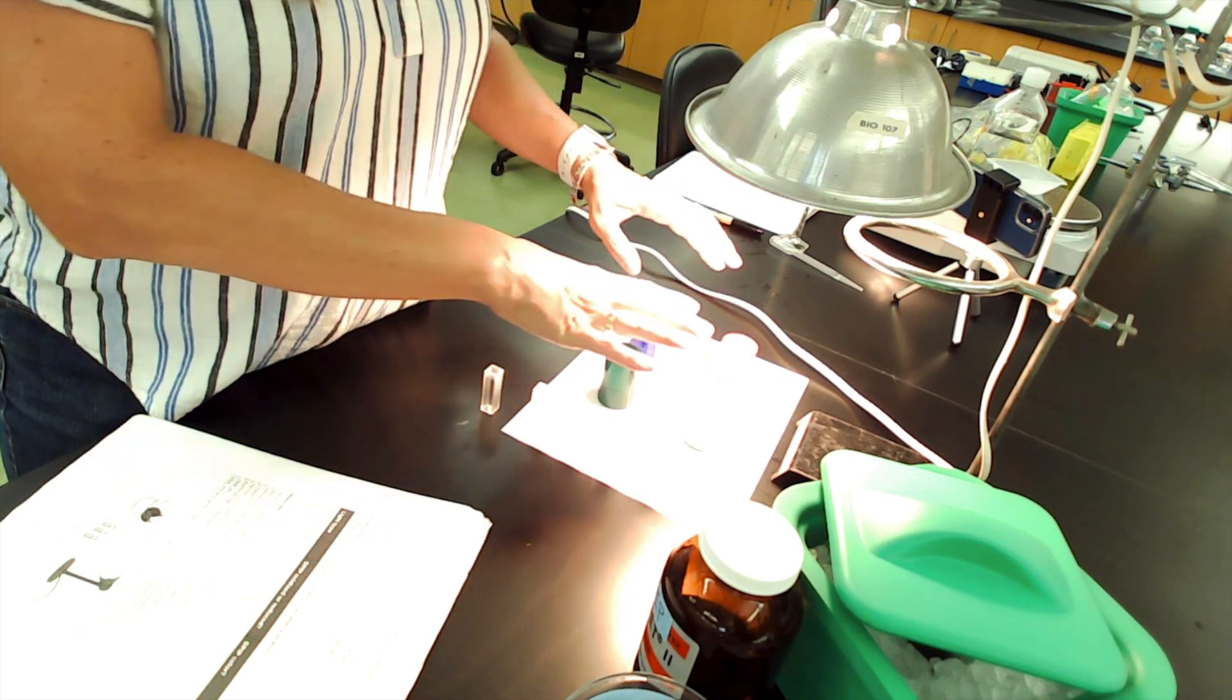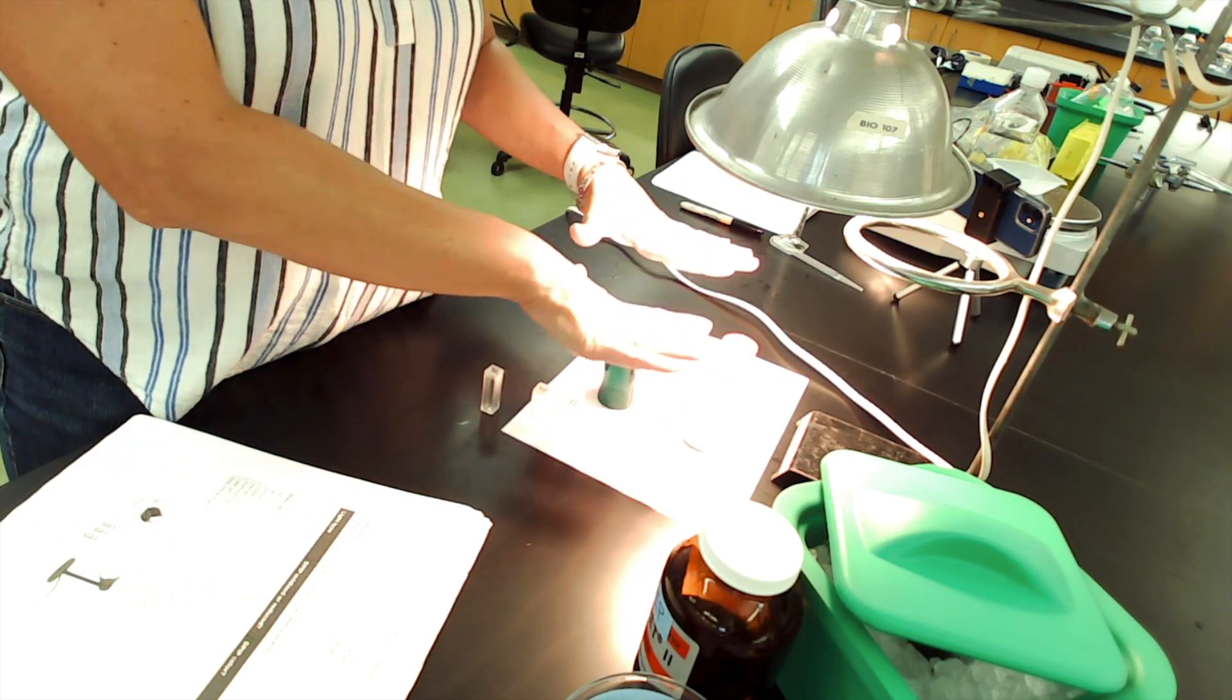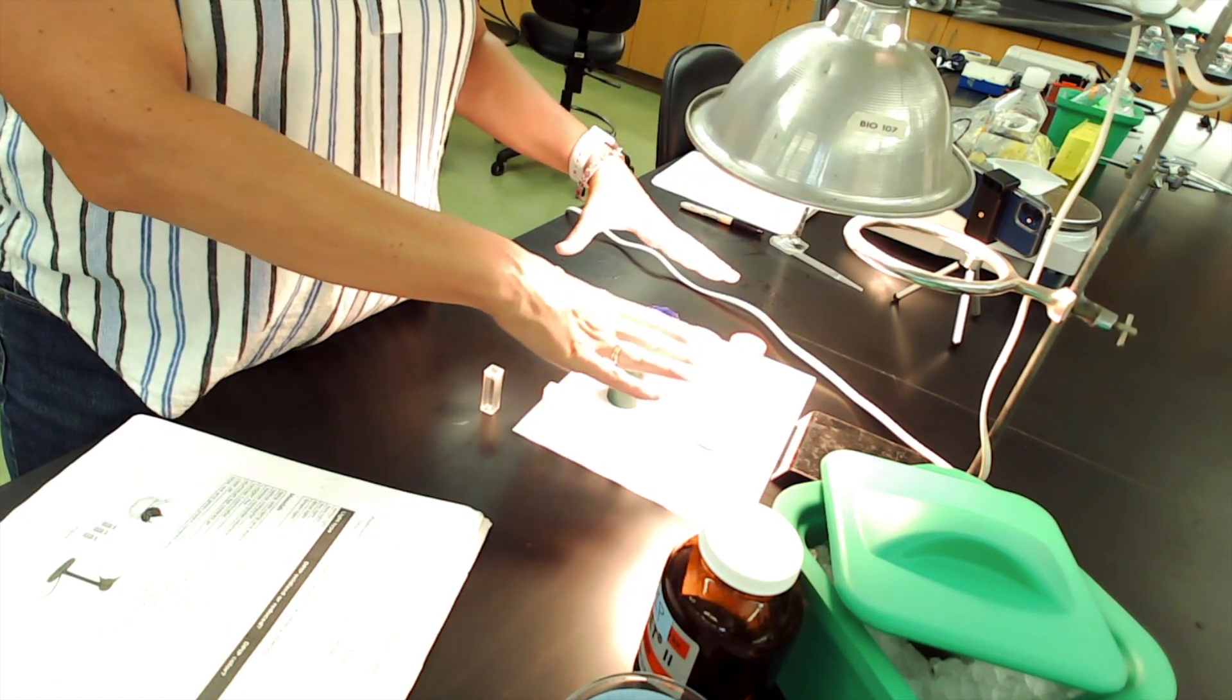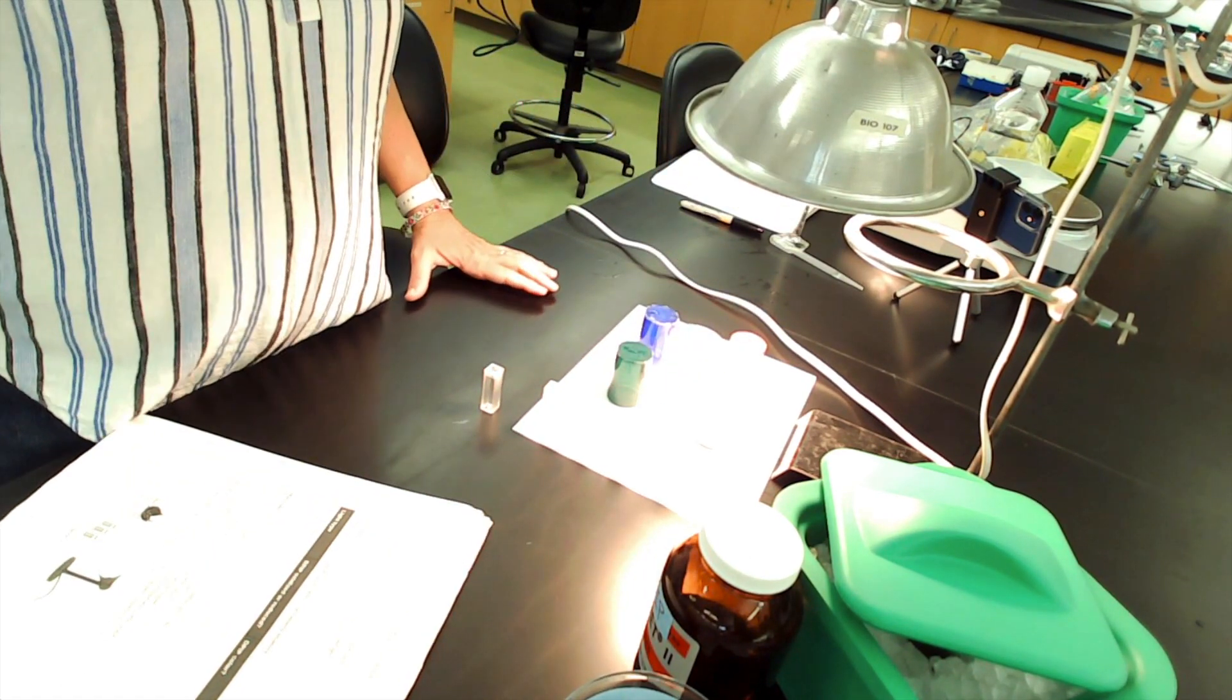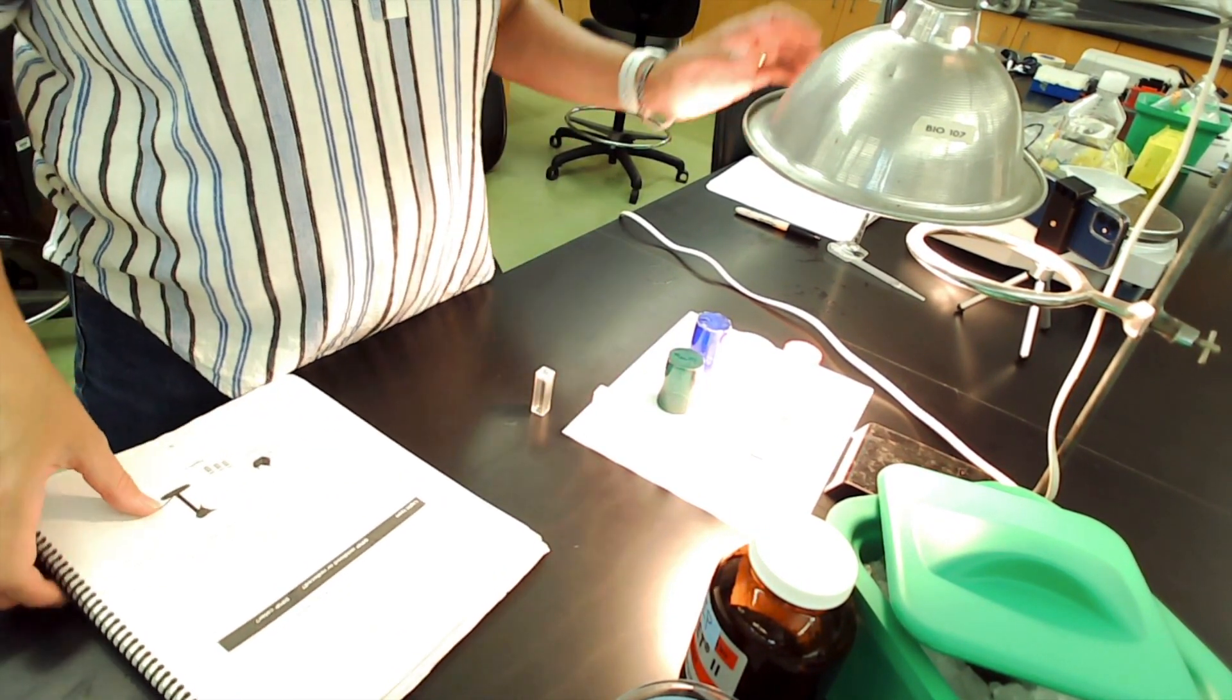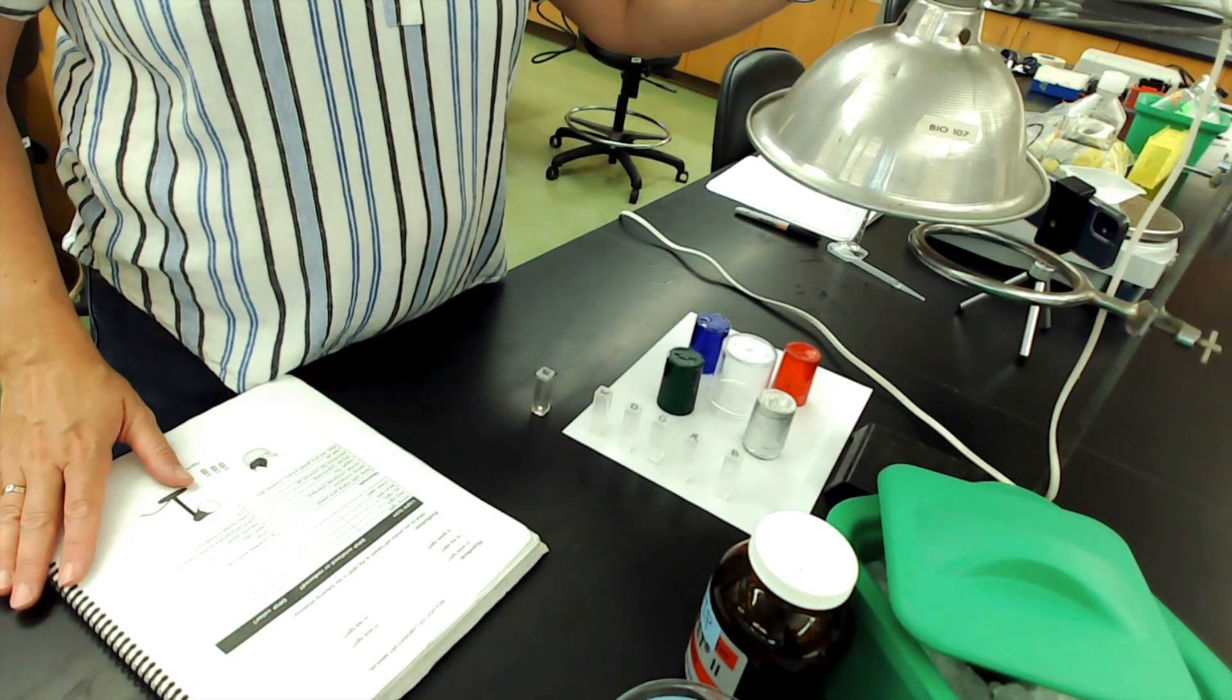What's going to happen is these are our simulated light conditions that occur when we shine this light from here down on them. Right now the light's on. Now I'm going to turn it off.